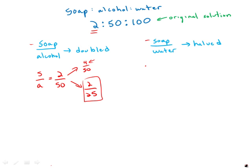Meanwhile, soap to water, 2 over 100, this is going to get halved, and so that means multiplying the denominator by 2. 2 over 200 is half of 2 over 100.